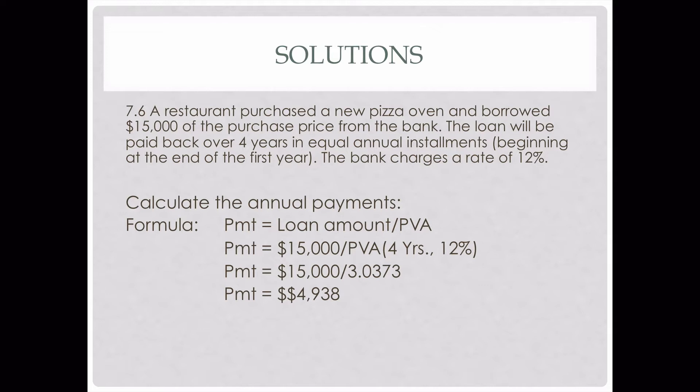Problem 7.6 assumes that you've bought a pizza oven — you've borrowed $15,000 at 12% for four years, and we need to calculate the payment. The payments are four equal payments. We take the formula: payment equals loan amount divided by PVA. The loan amount was $15,000, and the PVA was for four years at 12%, so we go to the PVA table, go to four years, look down at 12%, and we get 3.0373.